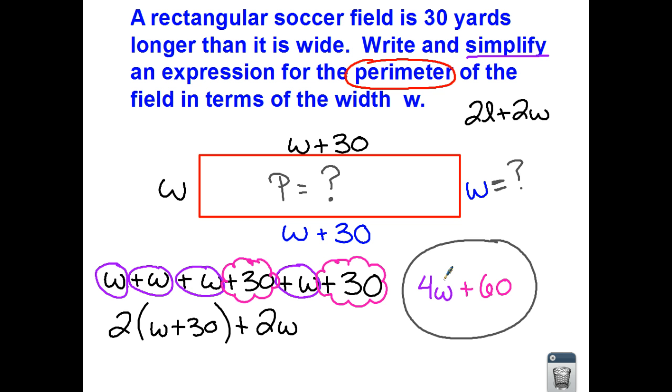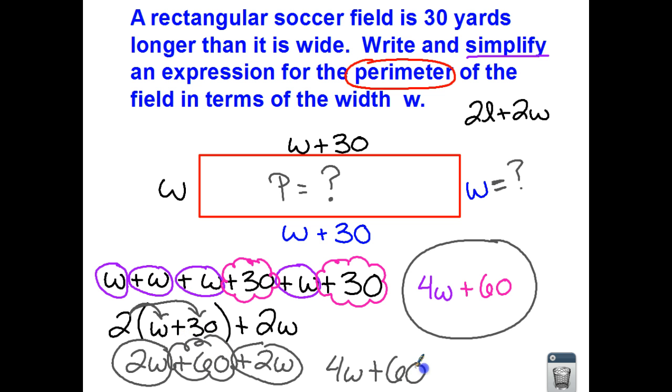Now, just on a side note down here on the bottom, if you wanted to use your perimeter equation, we would have to distribute, use our distributive property. So we would come up with 2w plus 60 and another 2w. All right, combine your like terms. 2w plus 2w is 4w. And then you have your 60. So we get the same answer both ways.